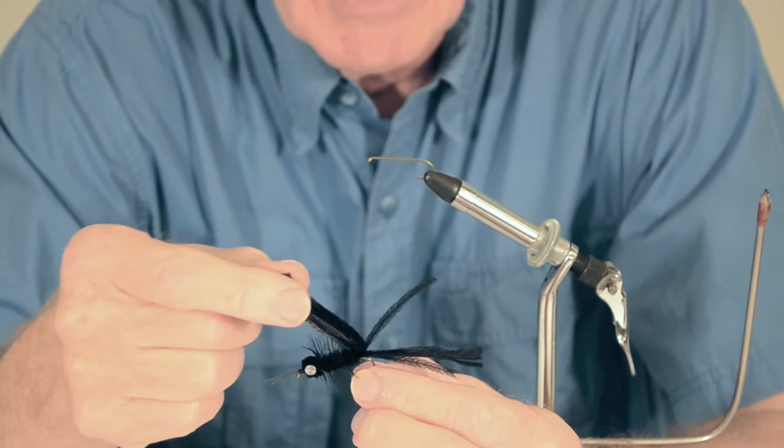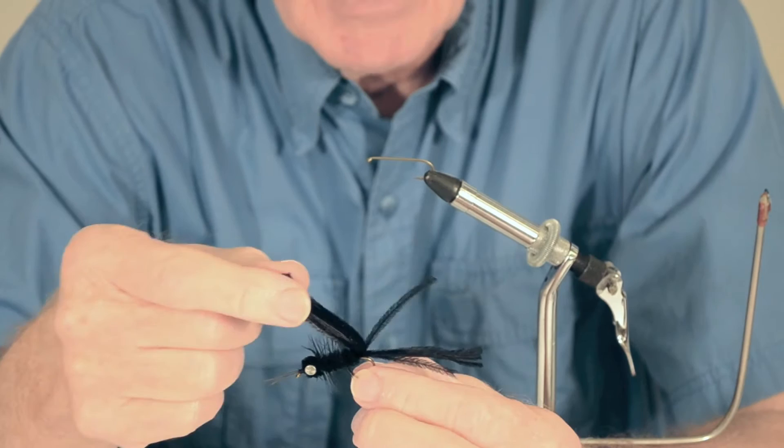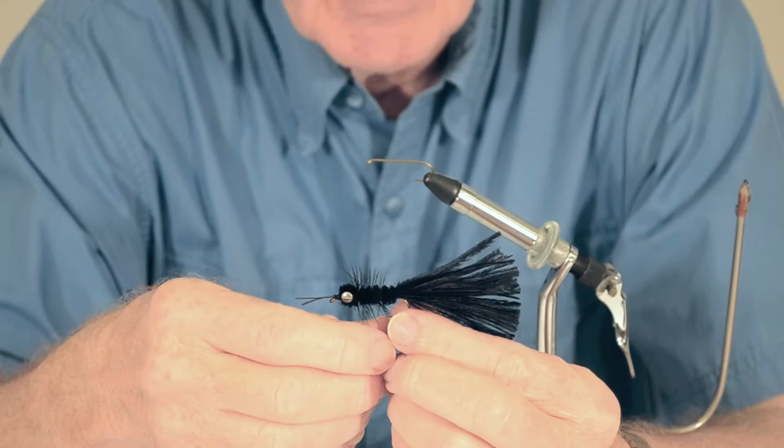Every pattern I had used had let me down. Ron Comer hit on the idea of using Ostrich Harrel, which was really the secret of the whole thing. So today we're going to tie that for you.